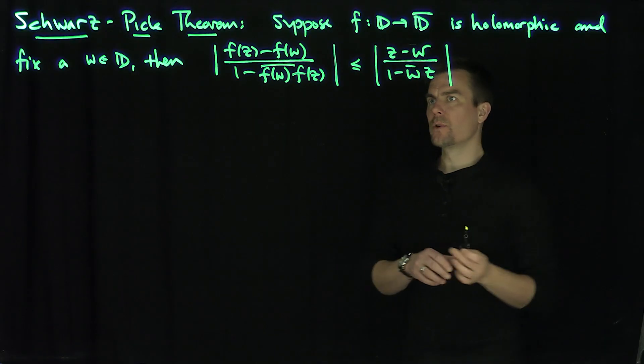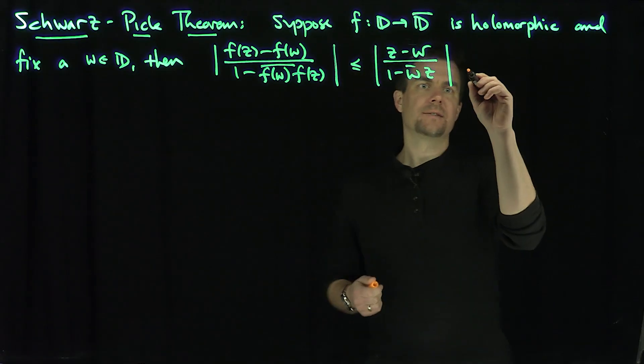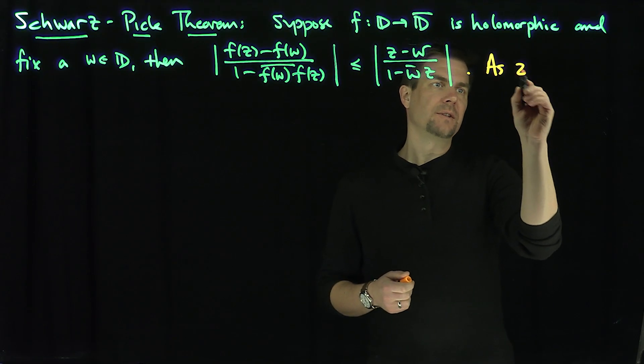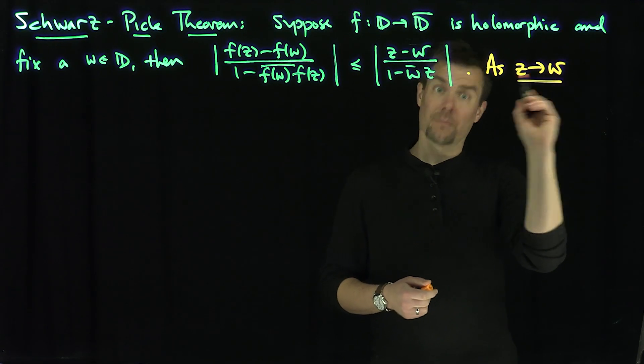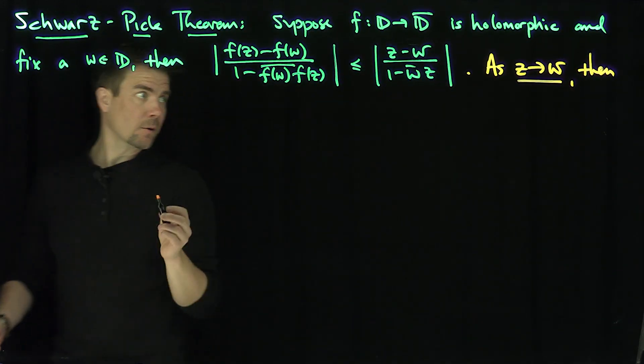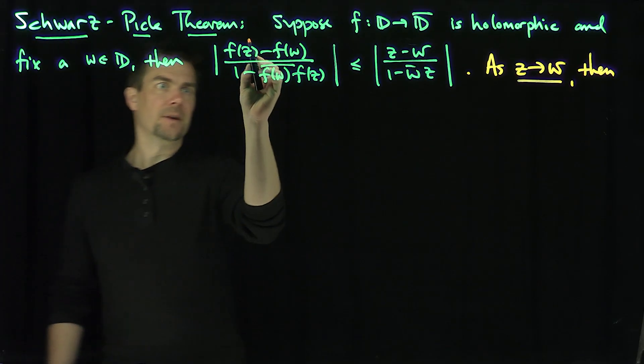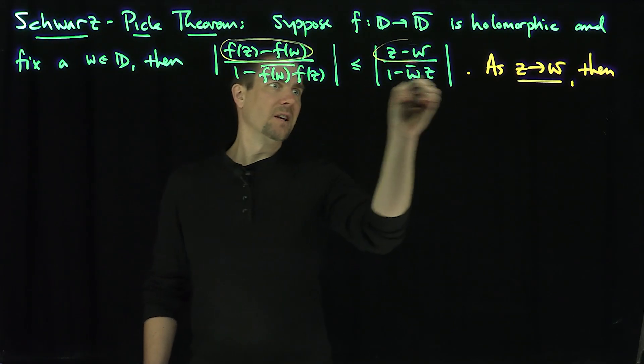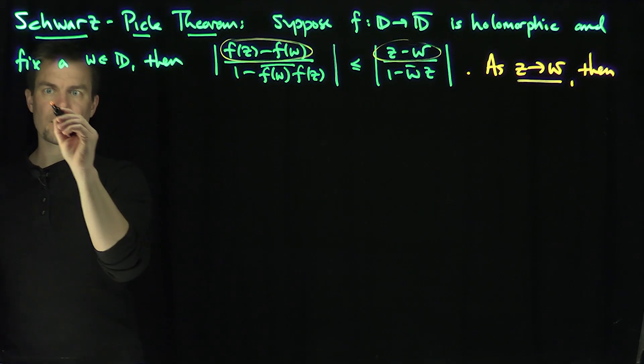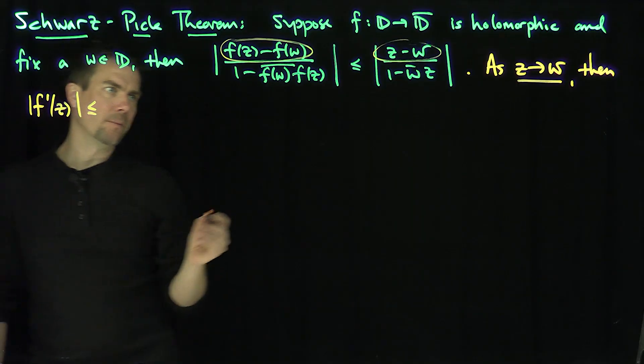Now, also note that if I let z approach w, as z tends to w, then what do we get? We get this beautiful inequality for the derivative. This divided by this is going to give me the derivative, so on one side of the equation we're going to have f prime of z less than or equal to—